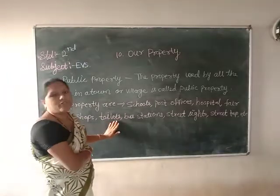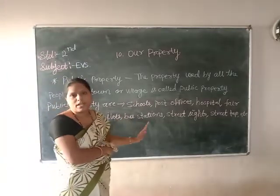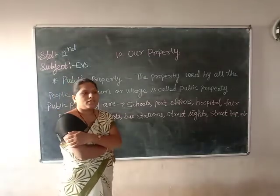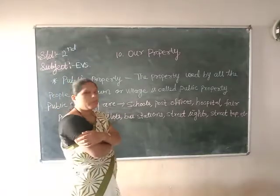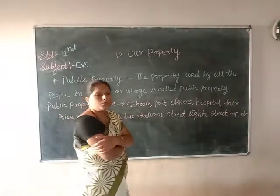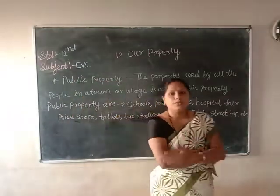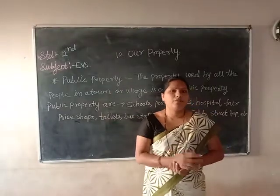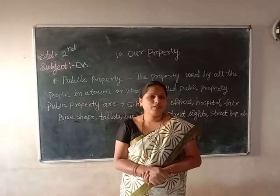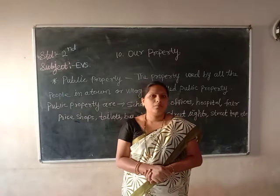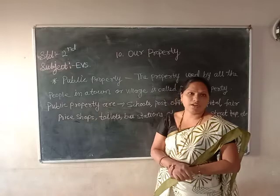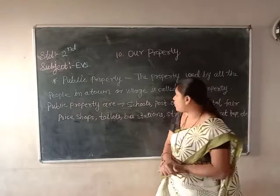Next one: toilet. We are using toilets in public places — they are constructed by the government, so that is also a public property. Next: bus stations and railway stations. We use these when we travel to different places by bus or train. A railway station is also a public property.